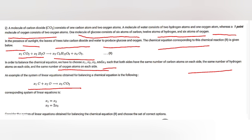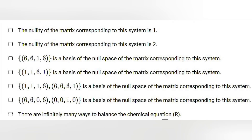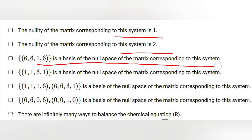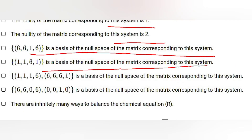An example of a system of linear equations for balancing chemical equations: x1·C + x2·O → x3·CO2, giving x1 = x3 and x2 = 2x3. The options for this question are: (1) the nullity of the matrix corresponding to this system is 1; (2) nullity is 2; (3) a given vector is the basis of the null space of the matrix; (4) another vector is the basis; or (5) there are infinitely many ways to balance the chemical equation.